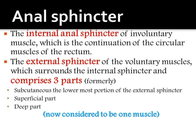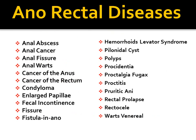The anorectal disorders include: anal atresia, anal cancer, anal fissures, anal wart, cancer of the anus, cancer of the rectum, condyloma acuminata, fecal incontinence, fissure, fistula in ano, hemorrhoids, levator syndrome, pilonidal cysts, polyps, procidentia, proctalgia fugax, proctitis, pruritus ani, rectal prolapse, rectocele, and volvulus. These will be discussed in the next lectures.